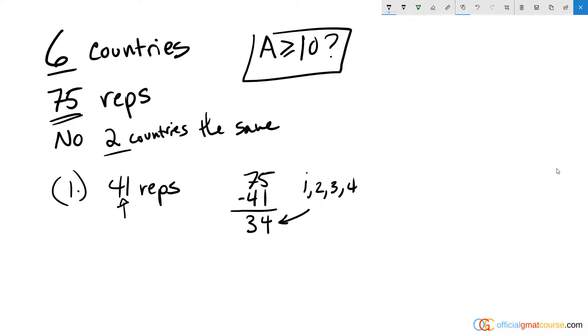which adds up to a total of five plus five is 10. So I have 10 plus the 41. For the other five countries, I have 51 or the other five countries are sending a total of 51 representatives, which means that A would have to send 24 reps to get to 75. So it is possible for A to send more than or equal to 10.